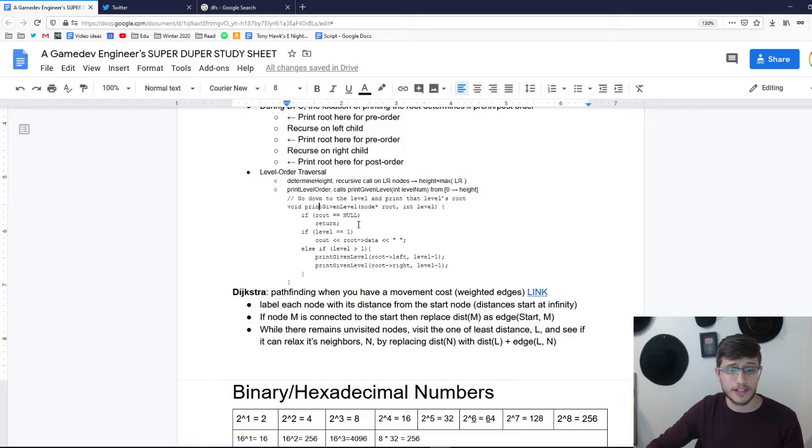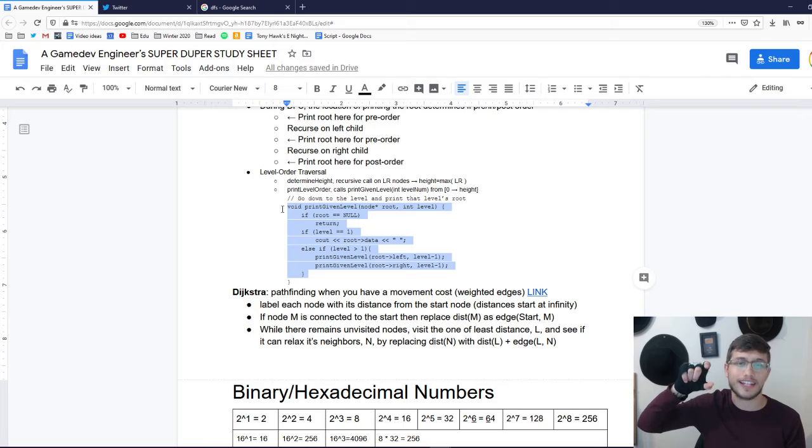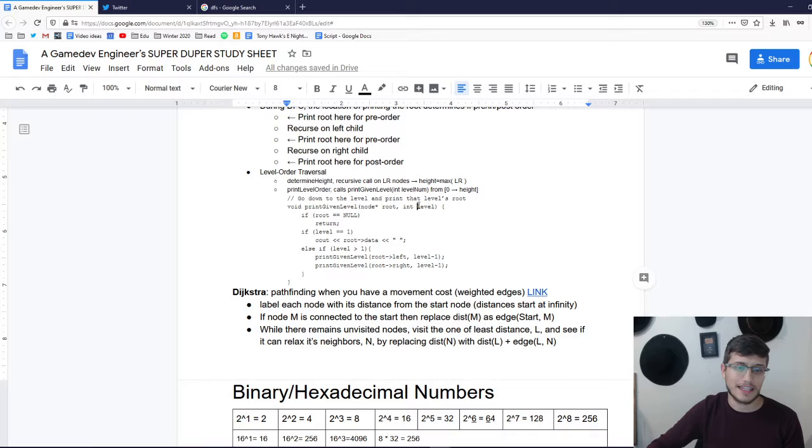And then you're going to have the method that is print level order, which is just going to call a helper method called print given level for levels zero all the way to height. And then that helper method print given level is going to have the root and an integer which represents the level. So basically you're going to say, is it not null? And then if it's one, you just print the root's data. And if it's greater than one, you're going to print, it's a recursive call again with this helper method on the left and the right. However, this time you can just ask for one level less. So basically what this method is doing is it's going down until it finds the actual level you specified, and then it's printing that node.